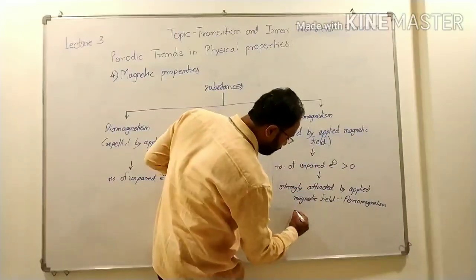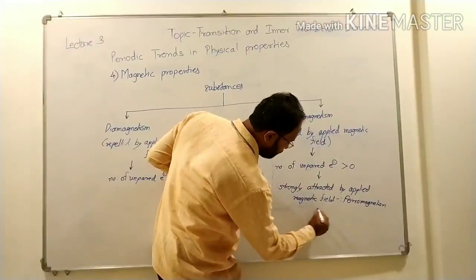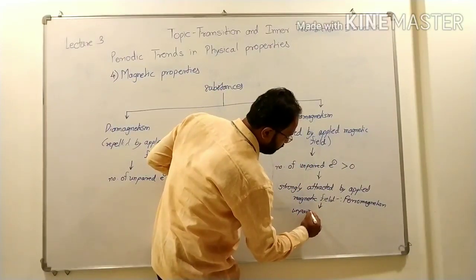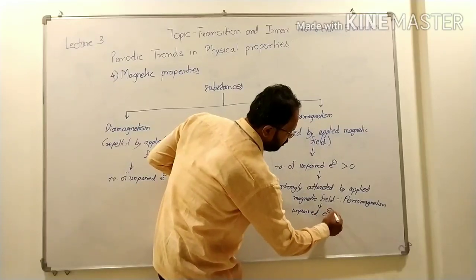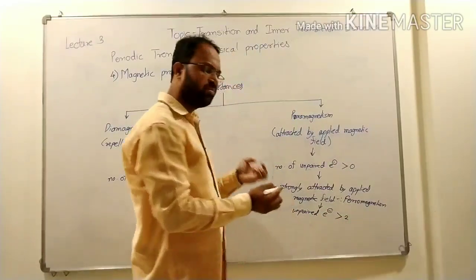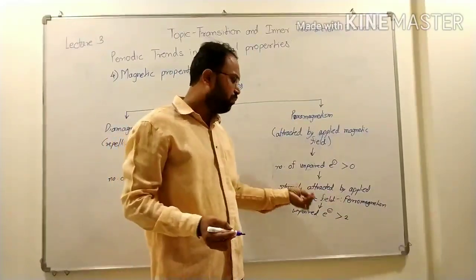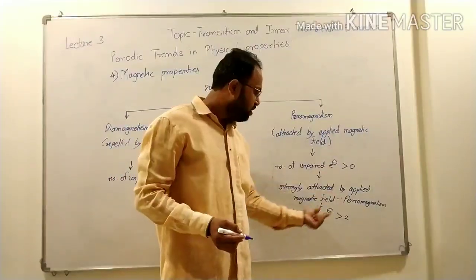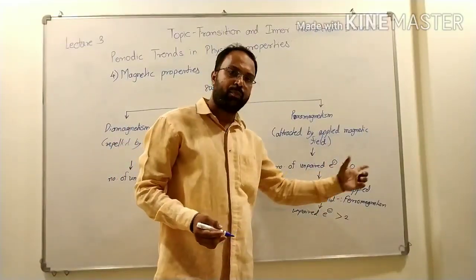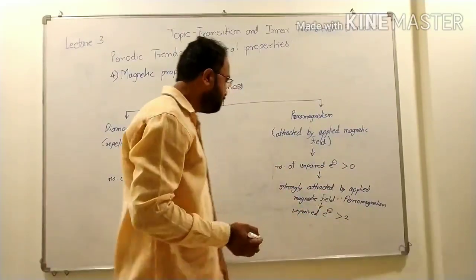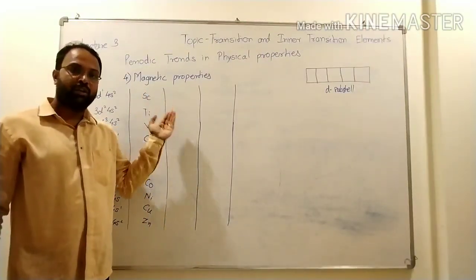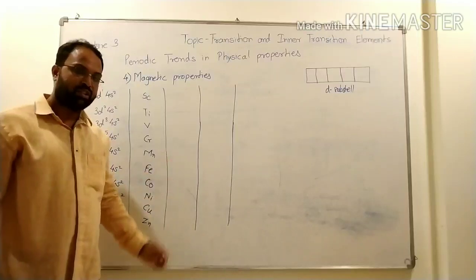Ferromagnetic substances have unpaired electrons — more than three, four, five, six, or seven — which show ferromagnetic properties. Now we will see the magnetic properties of the first transition series, from scandium to zinc.